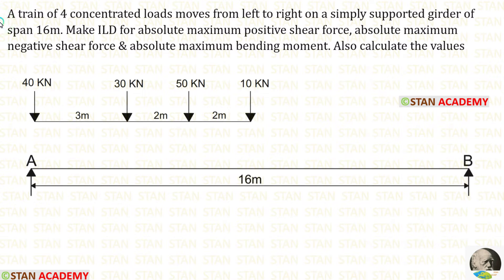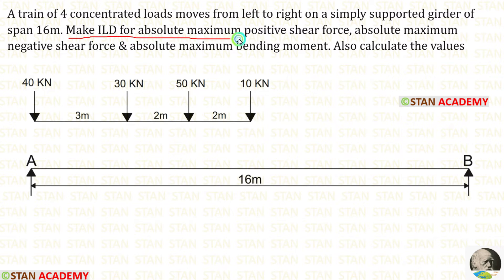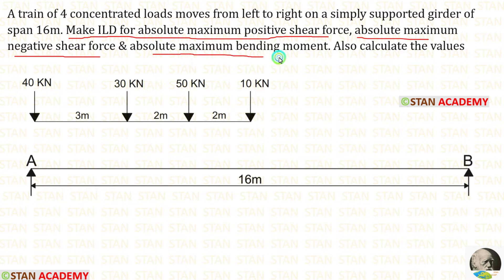Hello everyone. Today we are going to see a problem based on influence line diagrams. Let us read the question: A train of four concentrated loads moves from left to right on a simply supported girder of span 16 meter. Make influence line diagram for absolute maximum positive shear force, absolute maximum negative shear force and absolute maximum bending moment. Also calculate the values.